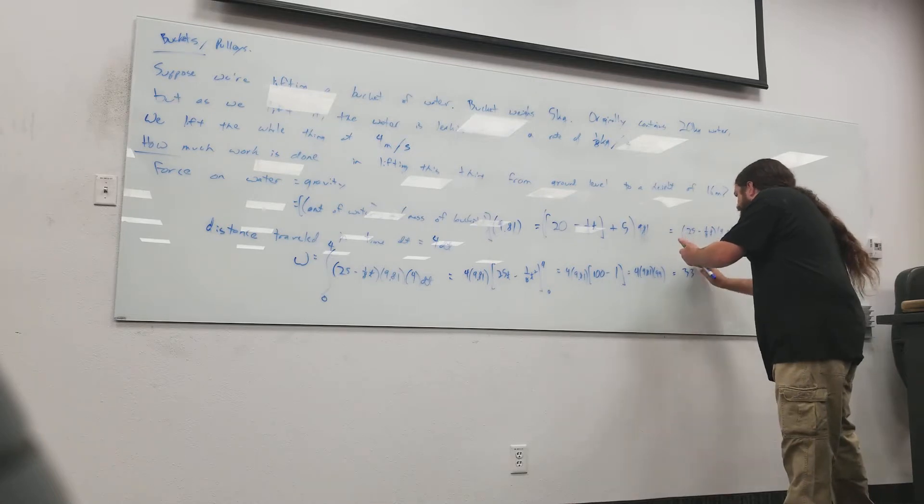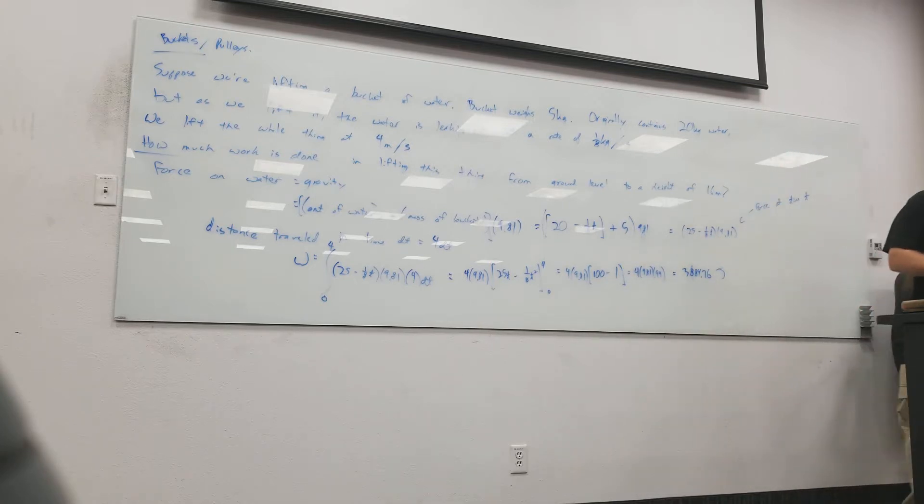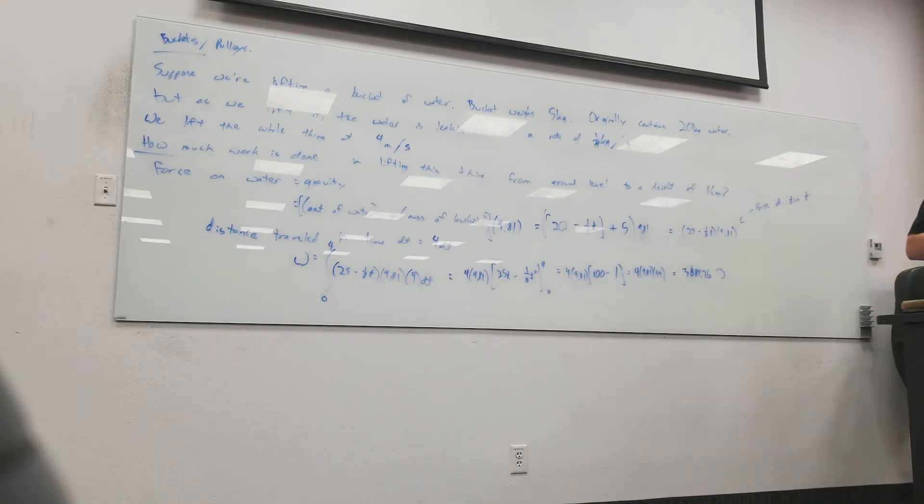So this is 3884.76, and that's joules, right? I have a question. Can you integrate it, should it be one over, oh, T squared over 16? Let's see. Minus one over 25T minus one over 16. Yeah, I do it. Hold on. I'm missing something easy, I can't tell what it is.